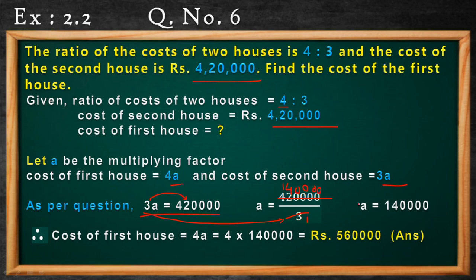A is equal to 1,40,000. Now the cost of the first house is 4A. We have the value of A as 1,40,000, so the cost of the first house is 4 into 1,40,000, which gives the answer 5,60,000. So this is just the first part of the question. Now let's do the second part.